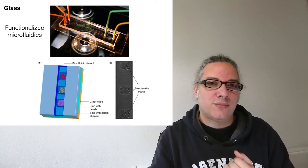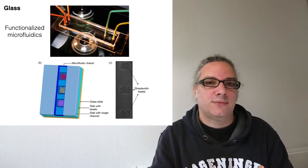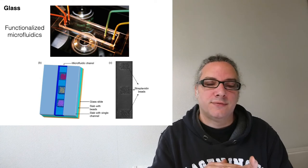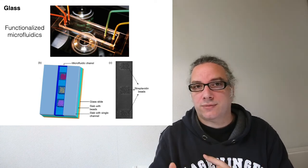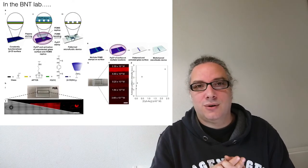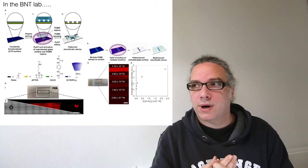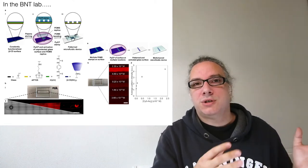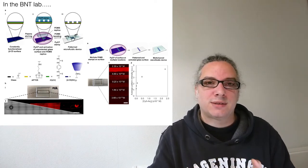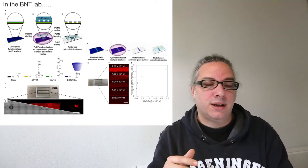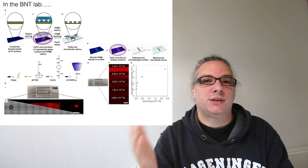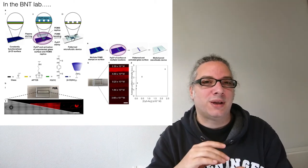Making those microfluidics with patterns inside is really difficult, so there are a lot of steps involved in making those microfluidics. Luckily, also this in our laboratory we did it in a pretty straightforward way. We use the same methodology that we used before, so we used the plasma oven for making the patterns, and after this we just attach a piece of PDMS on top for making a microfluidic.